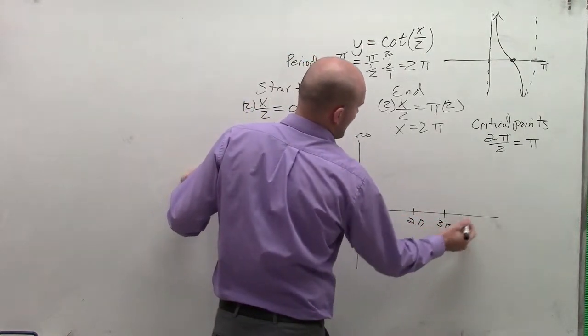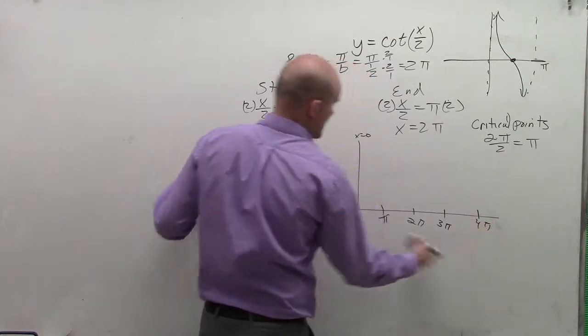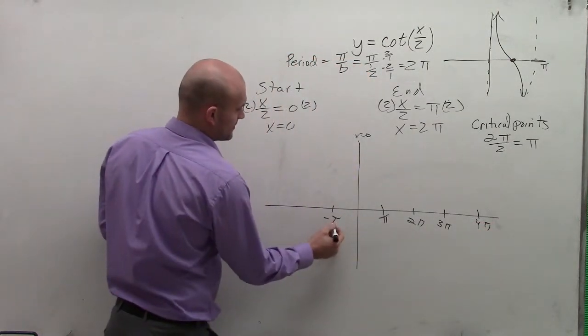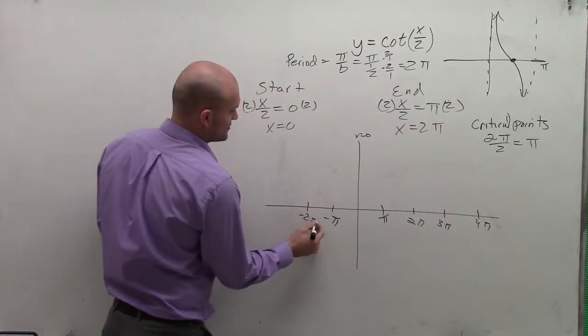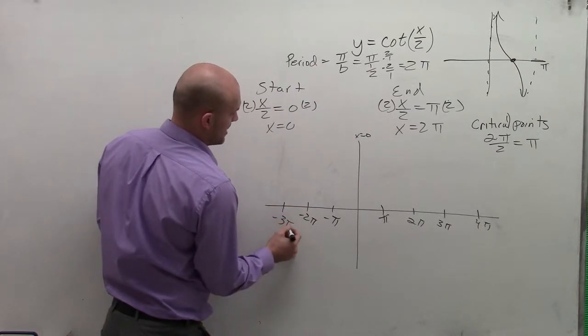Then we have 3 pi, 4 pi. And we can also go in the negative direction. Negative pi, negative 2 pi, negative 3 pi.